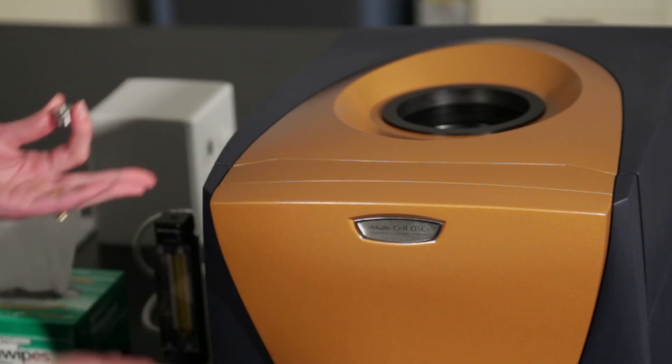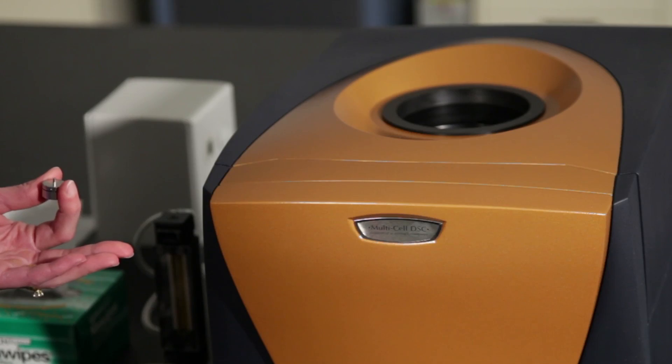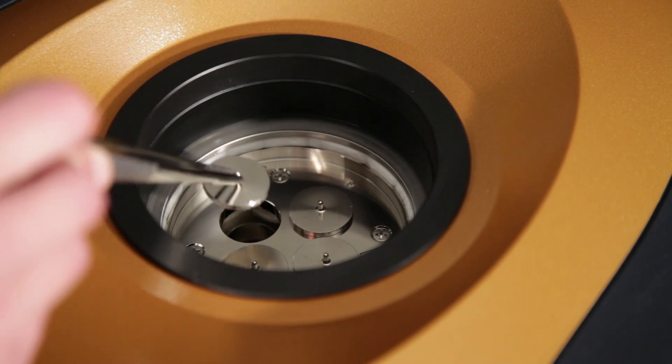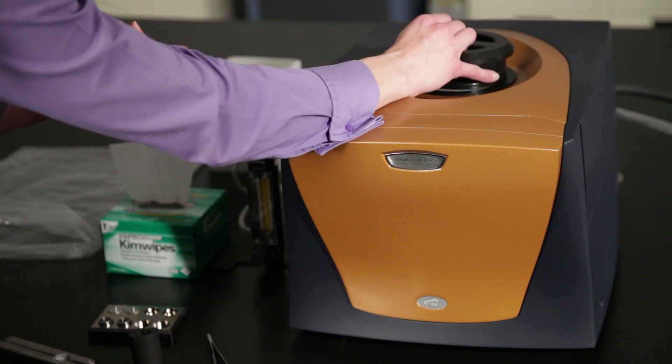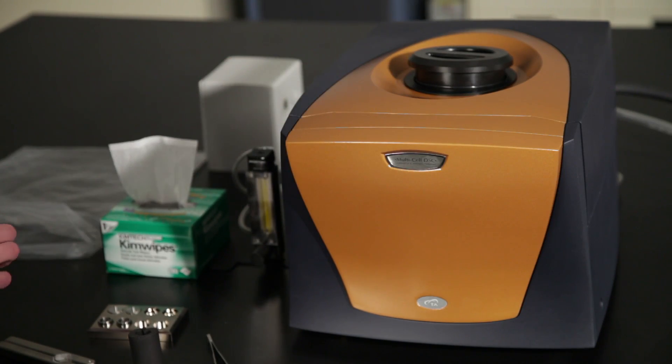It's important when not in use to either have one of the shunt lids on the instrument to avoid any type of debris entering there, or just put the entire lid on, preventing any debris from entering the inside of the instrument.